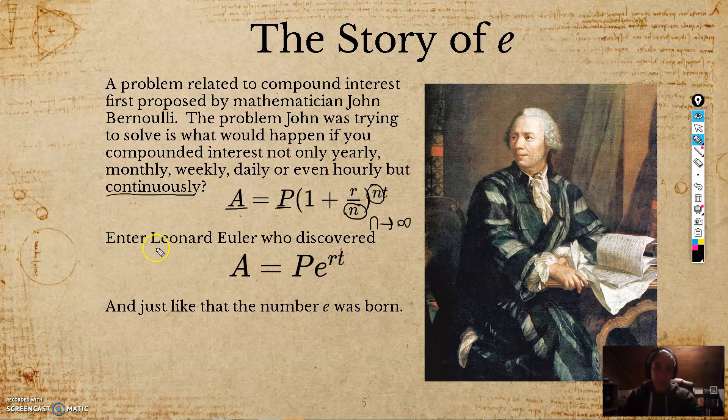And then Leonard Euler, which is why this is also called Euler's number, discovered that if we let N go to infinity, we go to this number E here, this constant. And then this is actually the formula now for if your money is compounded continuously, we use the E. So Euler figured this out. We call it the constant E, and just like that, the number e was born.